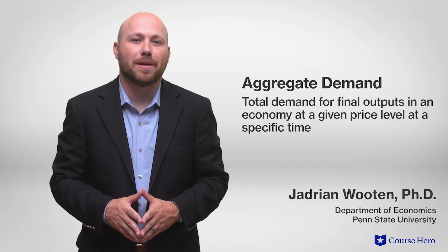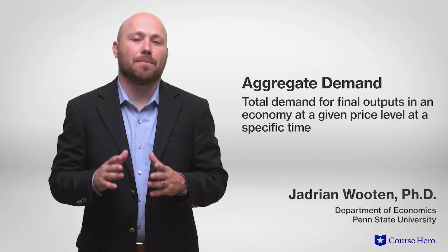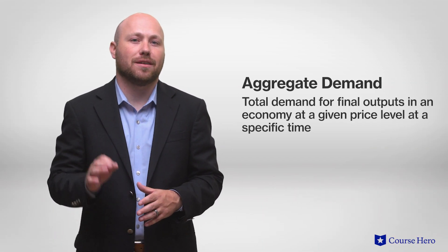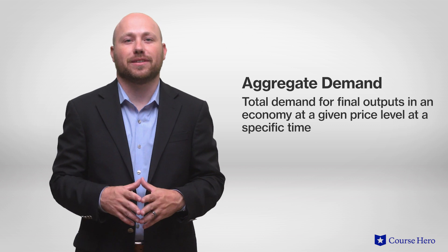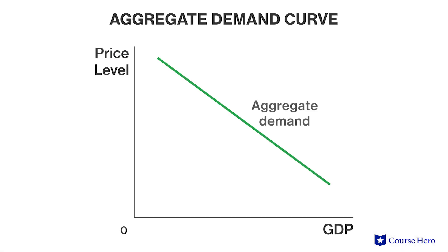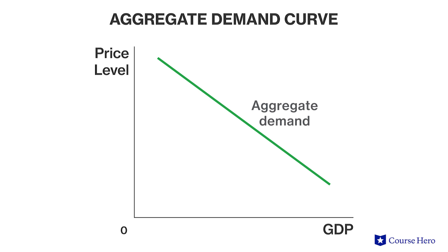Aggregate demand is the total demand for final outputs in an economy at a given price level at a specific time. Graphically, the aggregate demand curve is plotted with real output or real GDP on the horizontal axis and the price level on the vertical axis.